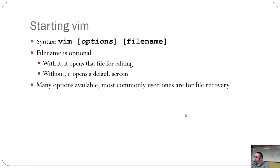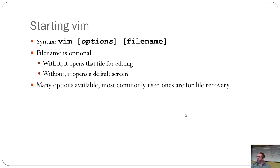Vim is launched by typing the vim command, with optional arguments and a file name. The file name is optional — just like when you launch Notepad, you can launch it without a document loaded. You can choose to create a document and save it, or double-click on a text file and it launches your text editor of choice. Under Linux, it might be gedit by default.